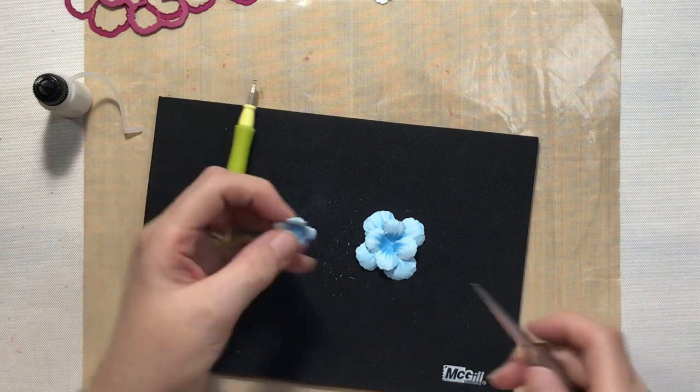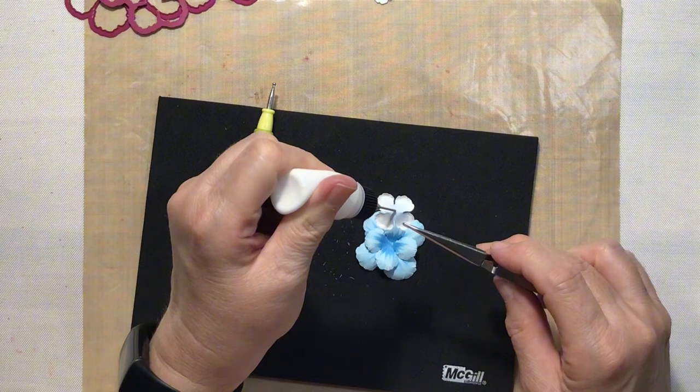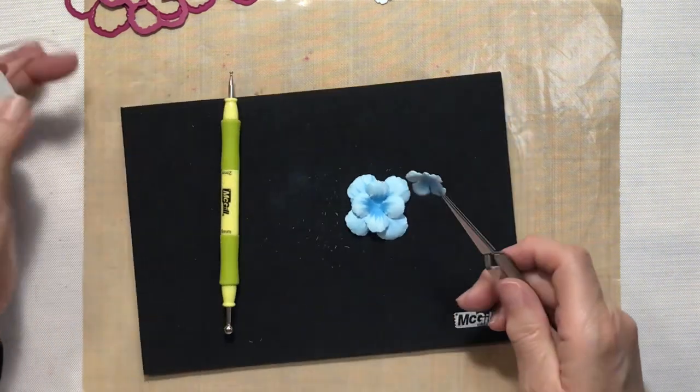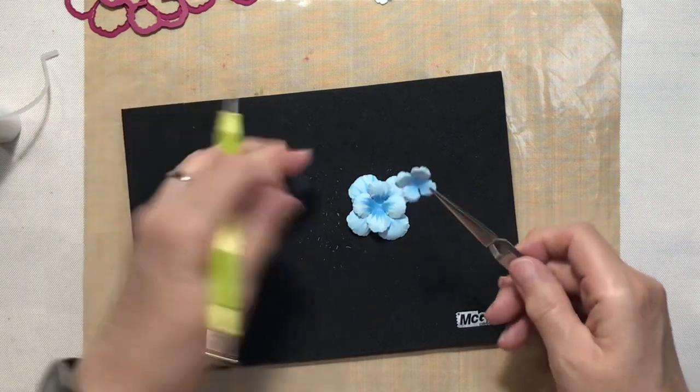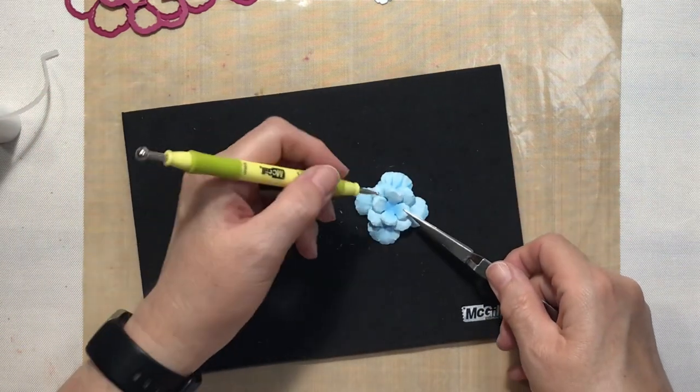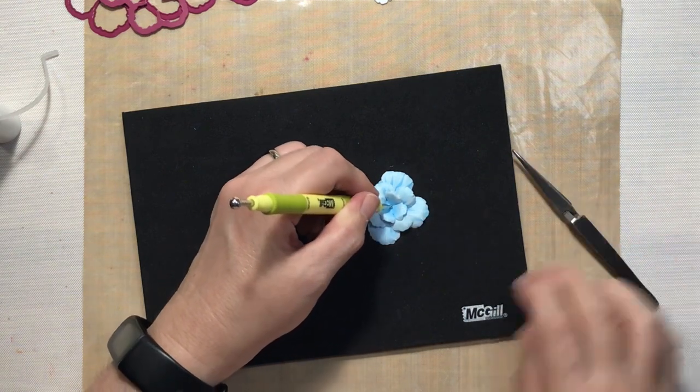All right, and now we'll do the same thing for our small petal. Just a little bit of glue in the center, and then I will offset the petals and just poke that down with the stylus.